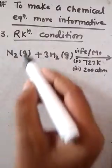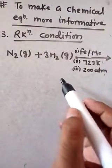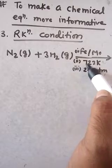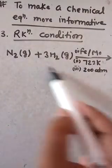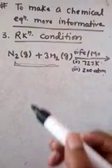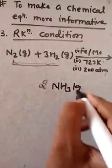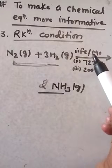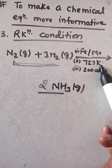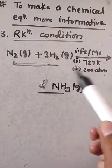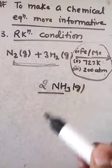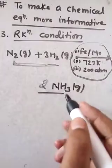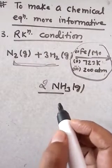The third point is reaction conditions. The condition of a reaction is written on the arrow. For example, nitrogen gas reacts with hydrogen gas to form ammonia under a catalyst of iron and a promoter of molybdenum, at 723 Kelvin temperature and about 280 atm pressure. These conditions are written on the arrow to make the equation more informative.